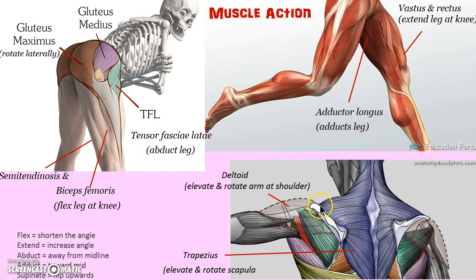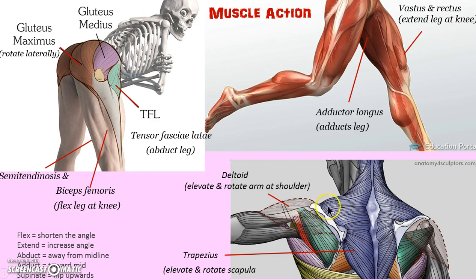I like to look at muscle fibers. You can see here the trapezius, lower right. You can just imagine when those muscles contract, they're going to pull on the scapula or shoulder blade and cause it to rotate and elevate. And it works in combination with the deltoid — these muscle fibers go across, so when they shorten, they're going to elevate the arm.